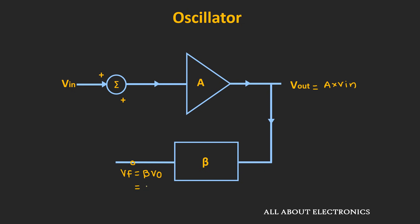Vf can be written as beta times the output voltage, which is equal to Aβ times the input voltage. Here, beta is the feedback fraction — it defines what fraction of the output voltage is fed back to the input stage. Now, if the phase shift introduced by the amplifier and the feedback circuit is zero, then this feedback signal will be in phase with the input signal.